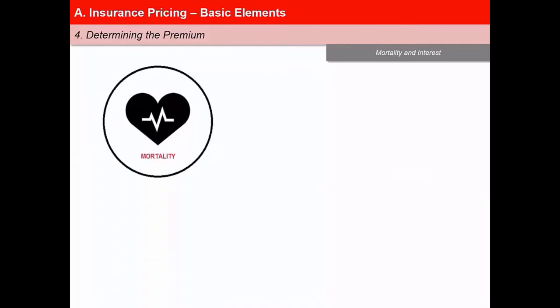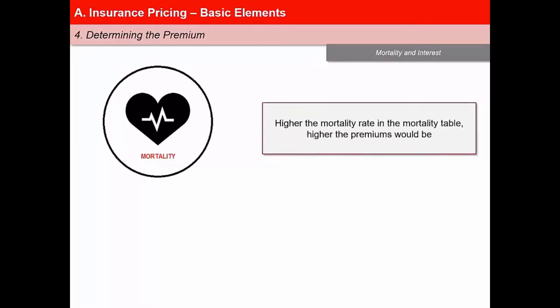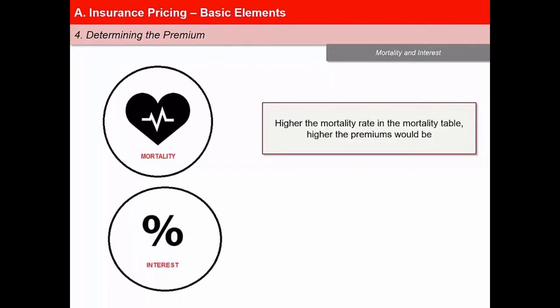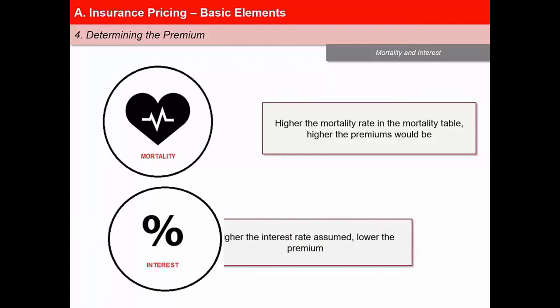Let us begin by understanding mortality and interest. Mortality is the first element required for calculating premiums. It is the chance or likelihood that a person of a certain age would die during a given year, determined using a mortality table which gives an estimate of the rate of mortality for different ages. Higher the mortality rate, higher the premium. Interest is the discount rate assumed for arriving at the present value of future claim payments. Higher the interest rate assumed, lower the premium.